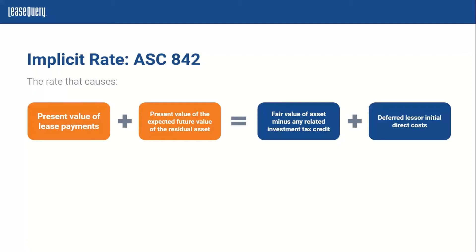As Abby has mentioned, the implicit rate is not normally specified in the lease and has to be inferred based on this information, which is often not readily available to the lessee. However, to consider the implicit rate, whether as the lessor or even if the lessee was able to figure it out, they would need to have these specific inputs.